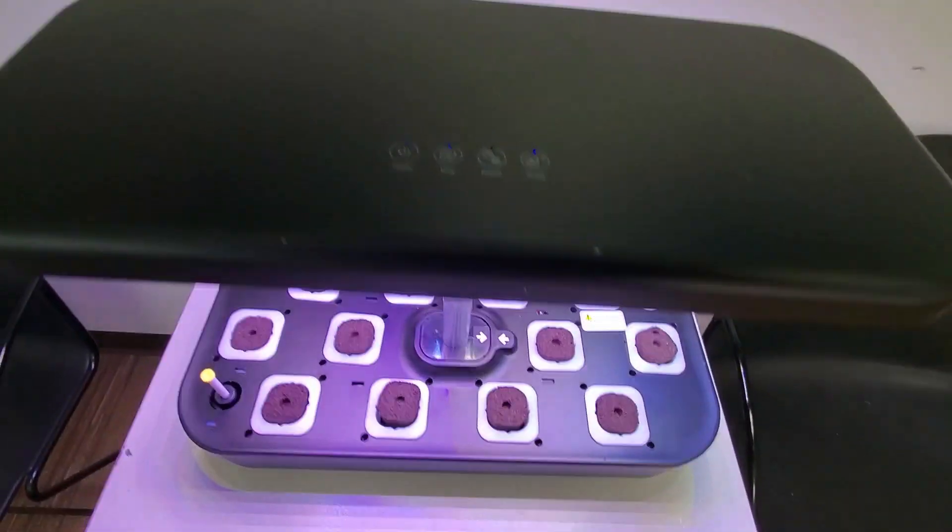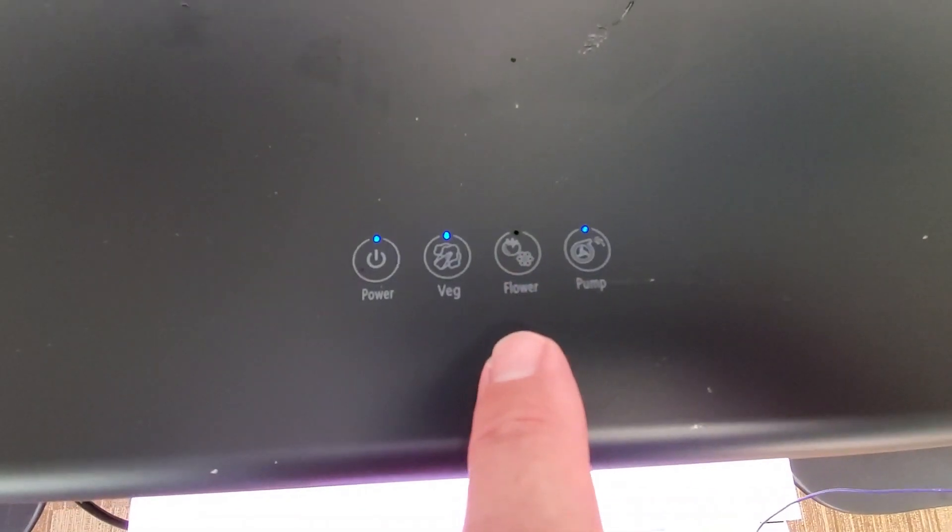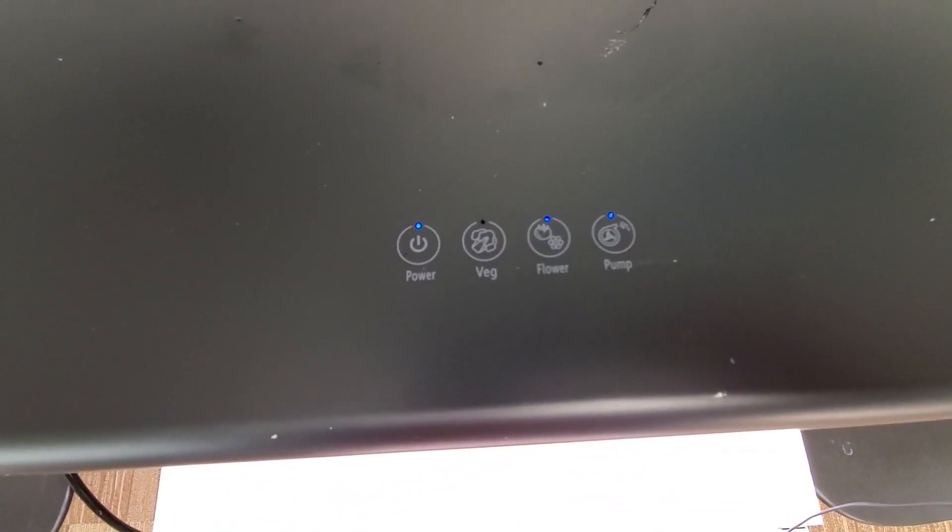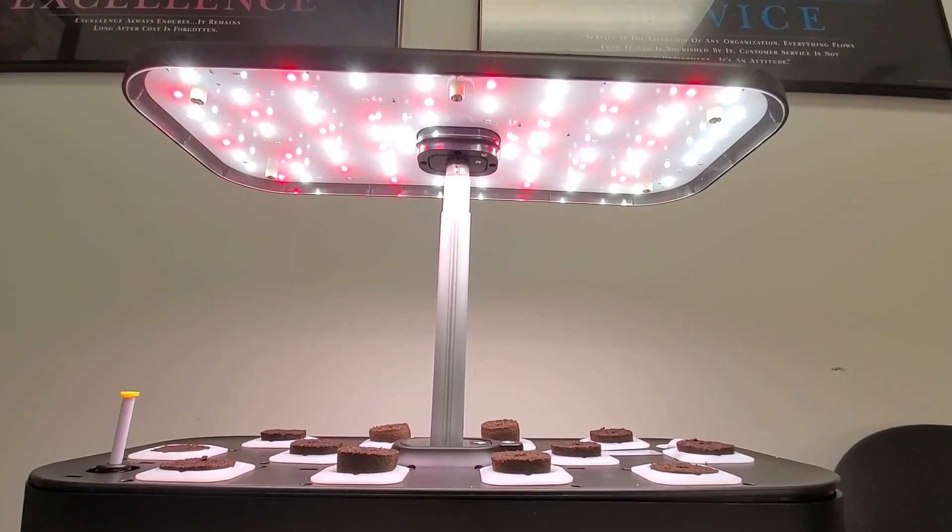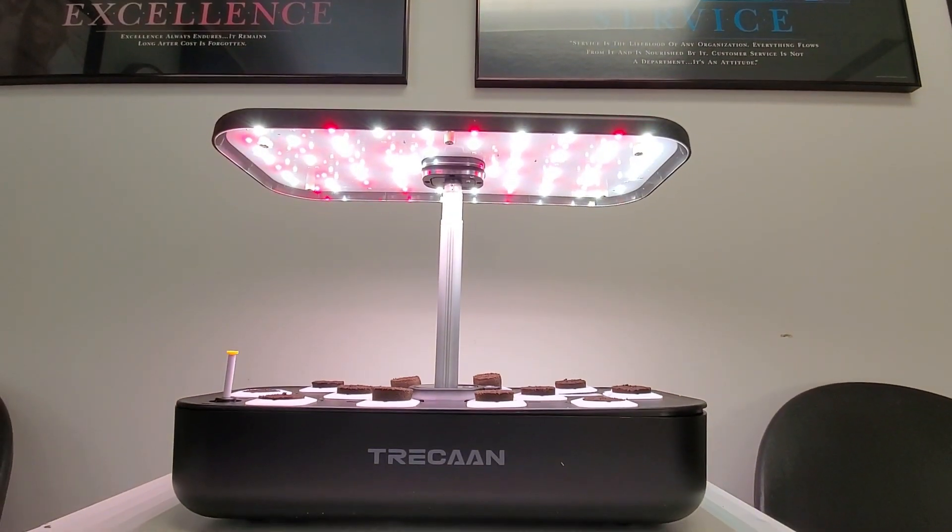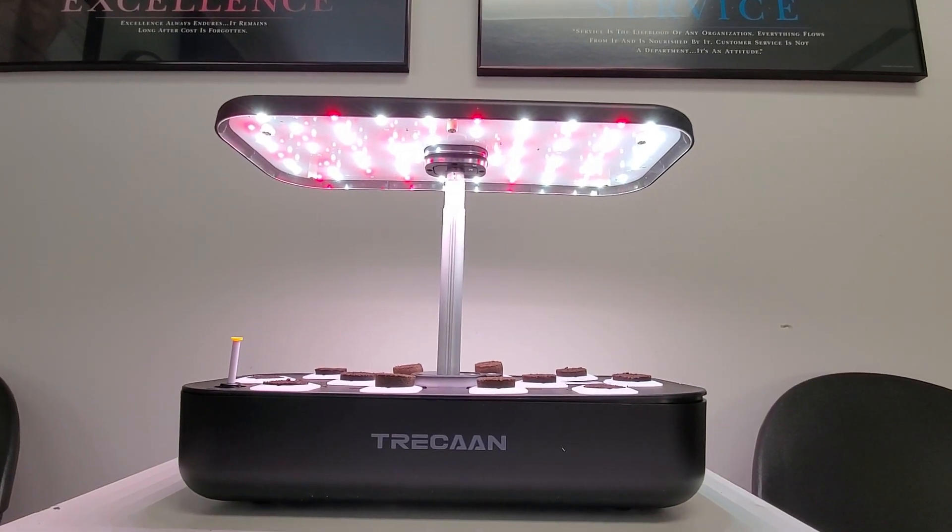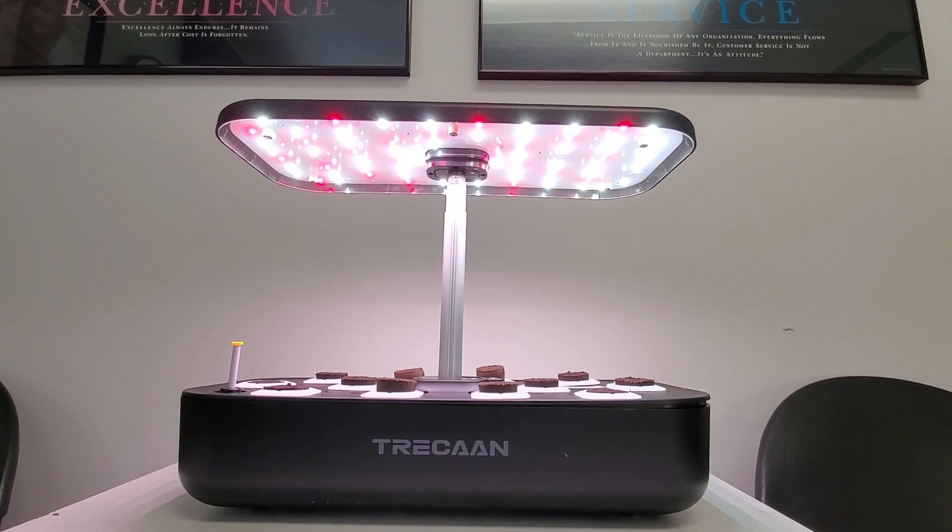If we were to switch this from veg over to flower, which is what you would use for fruiting, you notice a change in the color hue. You can notice that the light is established for a fruiting plant, such as a tomato plant.